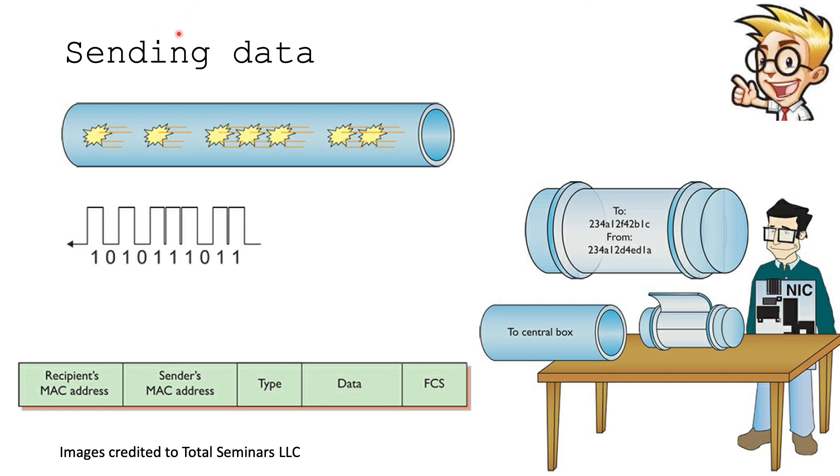A MAC address is actually on your NIC, on the network interface card. If you look at it closely, you should be able to find some sort of label or sticker. Alternatively, if you do an IP config slash all, you will get your MAC address in that slash all. Sending data: if you were to physically look at the network cable and look inside of it, you would just see pulses like that.